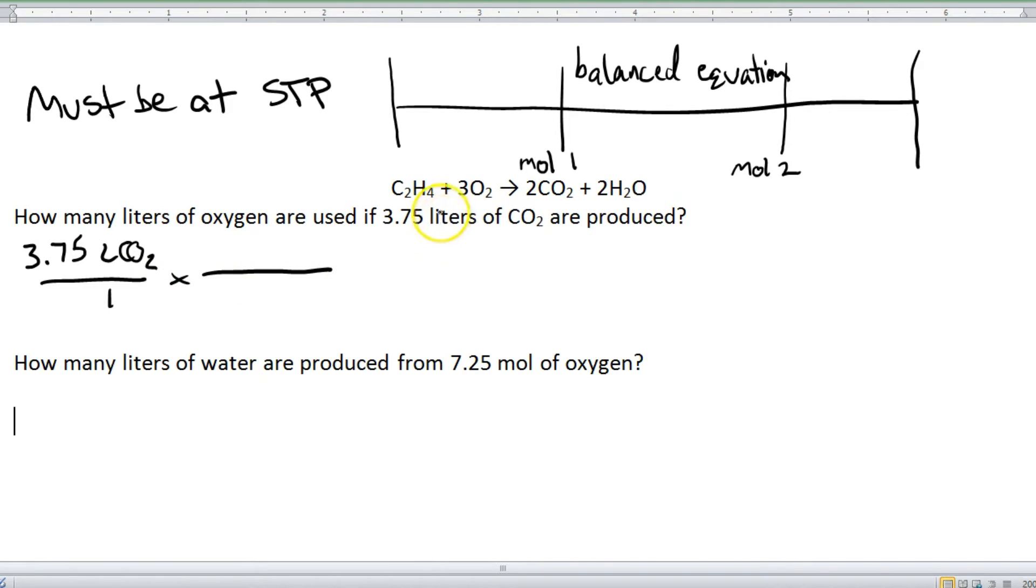Now, because this is a liters to liters conversion, then what I can do is I can take these numbers up here in the balanced equation and say that they are a volume ratio. So they're not just a molar ratio, they're also a volume ratio, as long as we're at STP. So, since we've got liters of CO2 on top, we're going to have liters of CO2 on the bottom. And since we're looking for liters of oxygen, that's what we'll go on top here. And we just take our numbers right out of the equation. So we've got 3 liters of O2 and 2 liters of CO2.